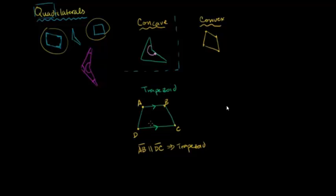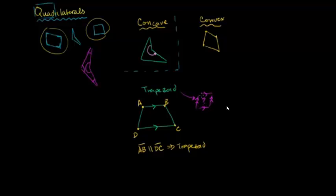If you use the original definition — exactly one pair of parallel sides — it might look something like this. But if you use the broader definition of at least one pair of parallel sides, then a shape with two pairs could also be considered a trapezoid. So this is a question mark when it comes to a trapezoid. But there is a name for a quadrilateral with two pairs of parallel sides regardless of your definition of a trapezoid: you are dealing with a parallelogram.